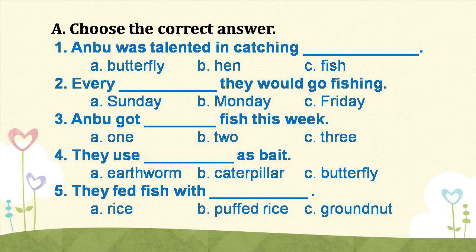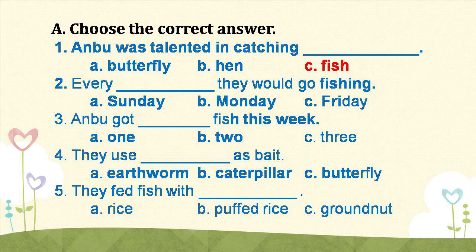Question number 1: Anbu was talented in catching blank. The options are: butterfly, hen, fish. The answer is fish. Anbu was talented in catching fish.